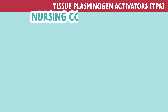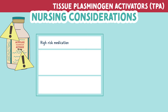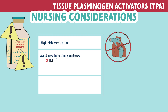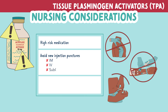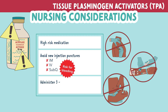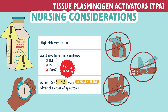Since this is a high-risk medication, there are special considerations for administration. We need to avoid new injection punctures — avoid IM injections, starting new IVs, and sub-Q injections — all due to the risk of bleeding. This medication should also be administered three to four hours after the onset of symptoms to allow it to break apart the clot quickly.